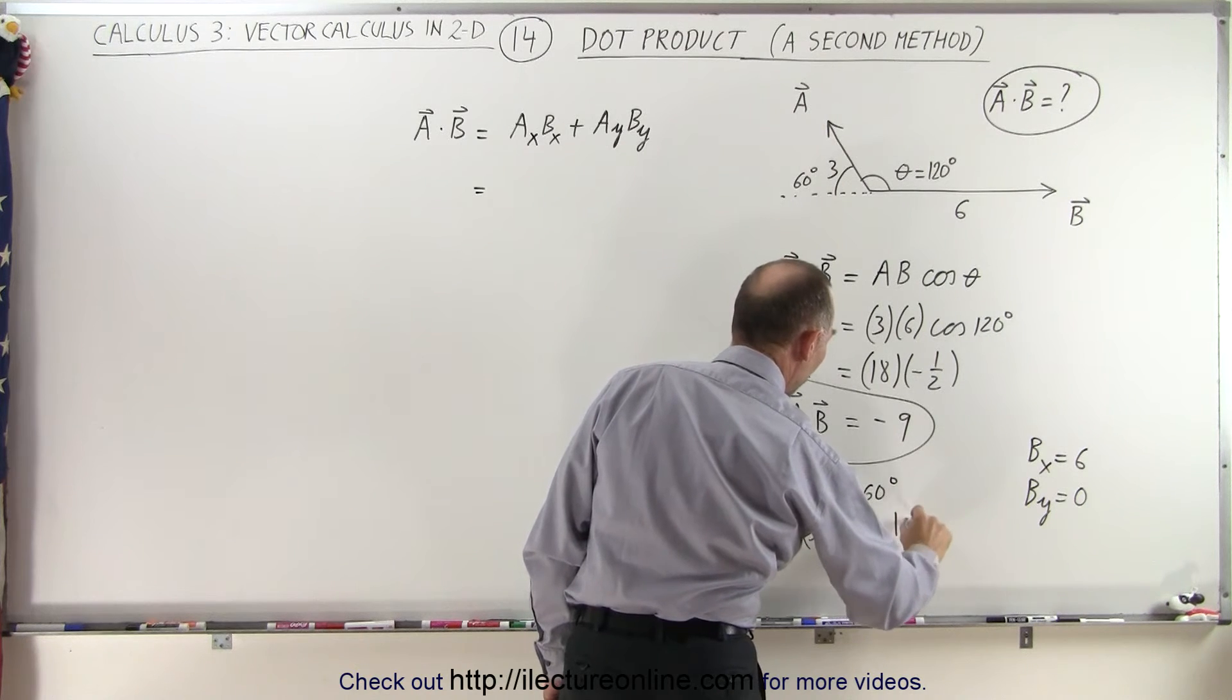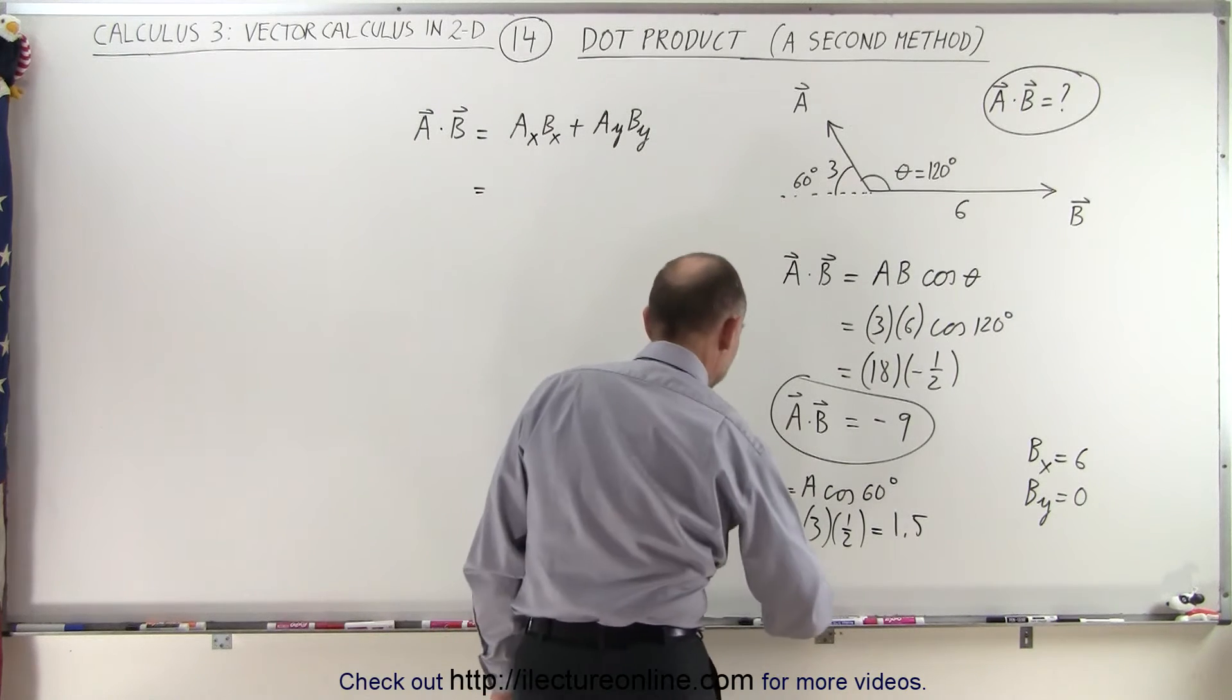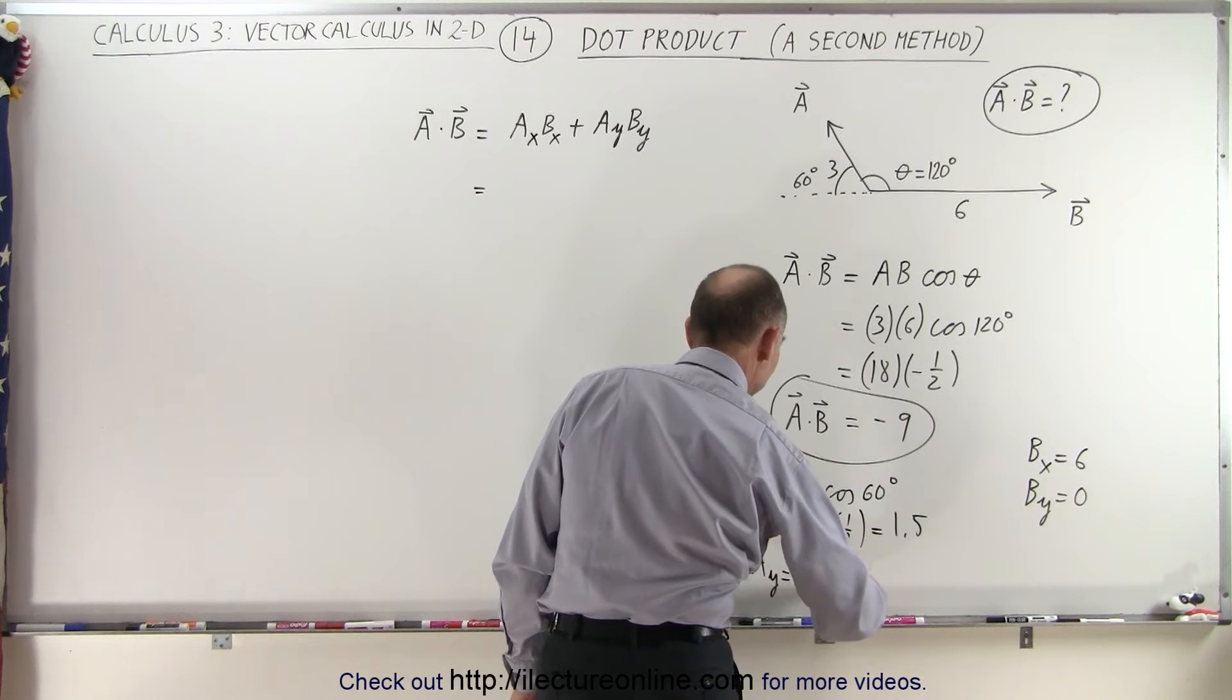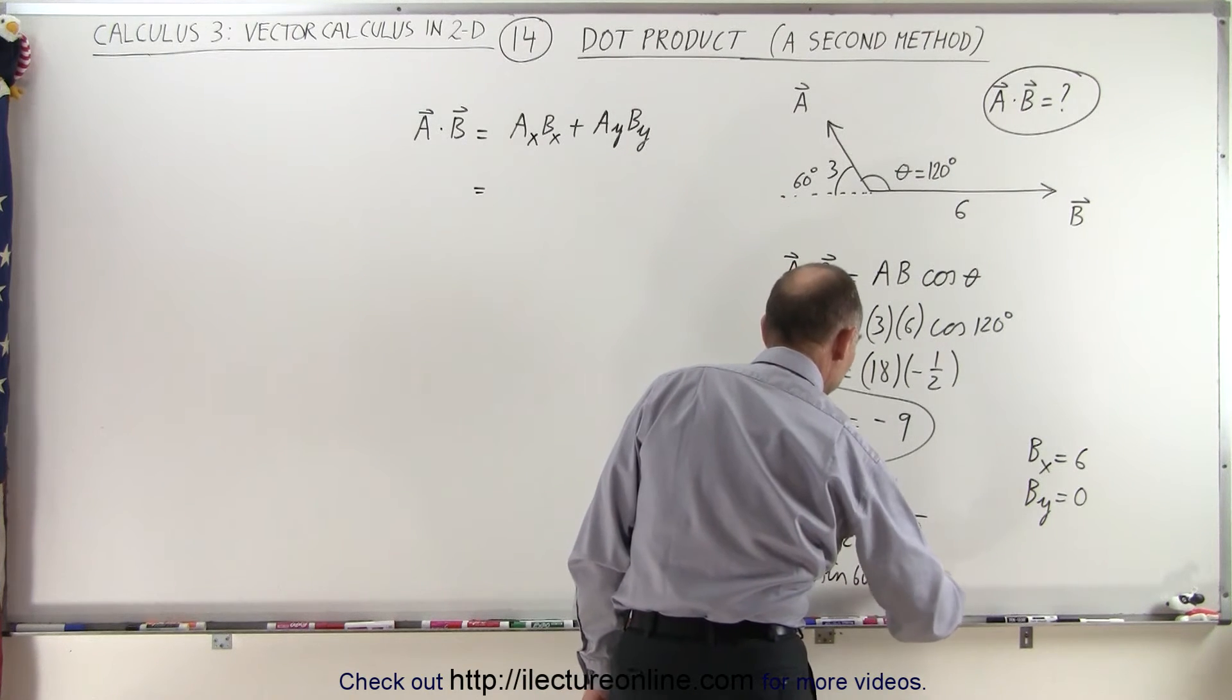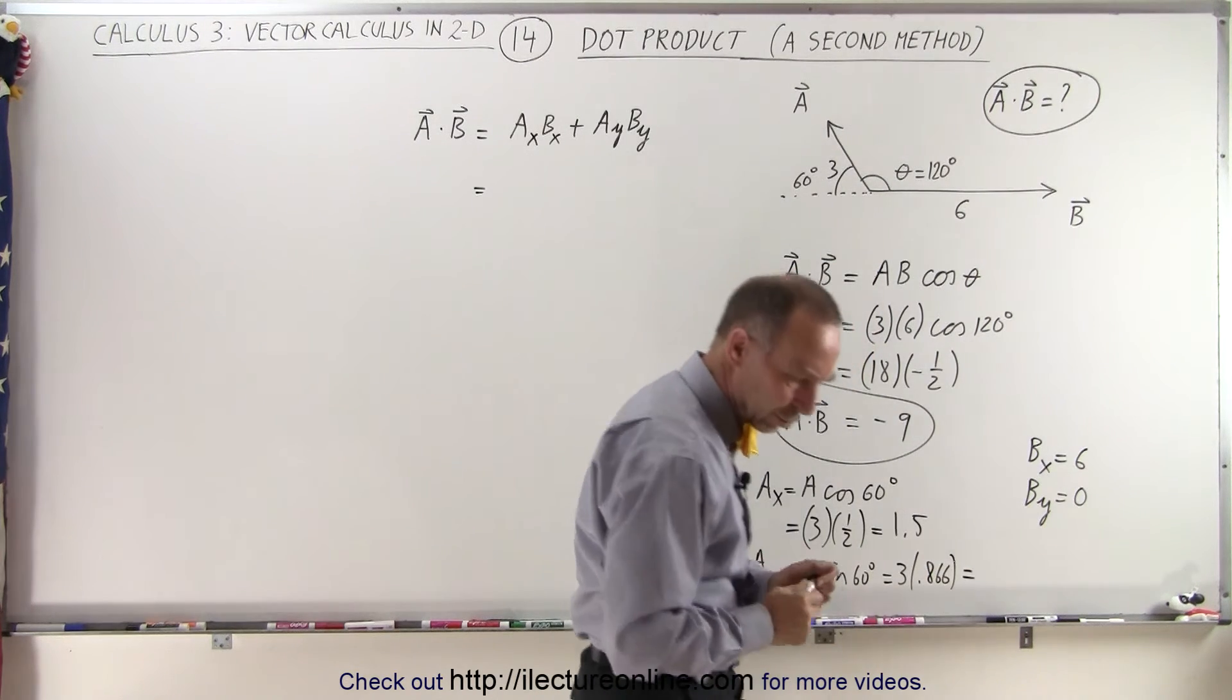And remember, the magnitude of the vector must be positive. And then we can say that A_y is equal to A times the sine of 60 degrees, which is equal to 3 times 0.866. And let's see what that's equal to.